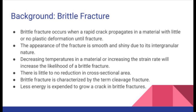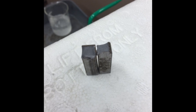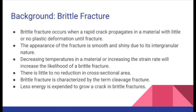Brittle fracture occurs when a rapid crack propagates in a material with little or no plastic deformation until fracture. The appearance of the fracture is smooth and shiny due to its intergranular nature. Decreasing temperatures or increasing the strain rate will increase the likelihood of a brittle fracture. There is little to no reduction in cross-section area. Brittle fracture is characterized by the term cleavage fracture, and less energy is expended to grow a crack in brittle fractures.